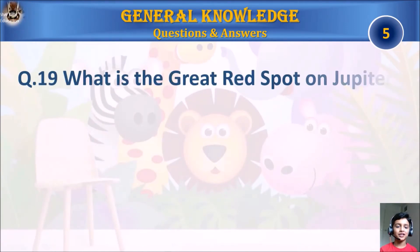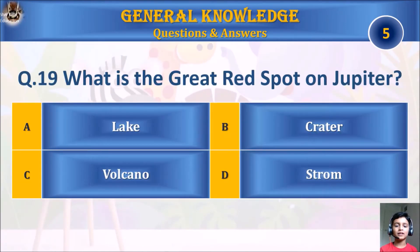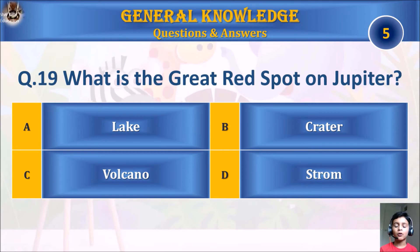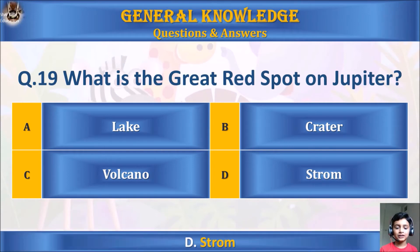Question 19: What is the Great Red Spot on Jupiter? A. Lake, B. Crater, C. Volcano, or D. Storm. Your time starts. The answer is D. Storm.